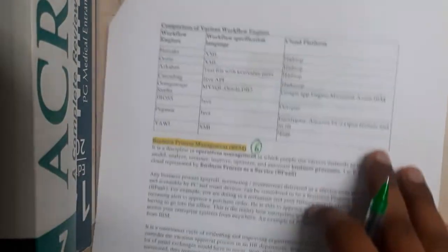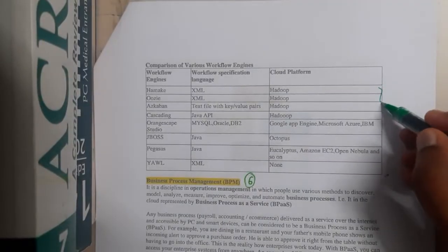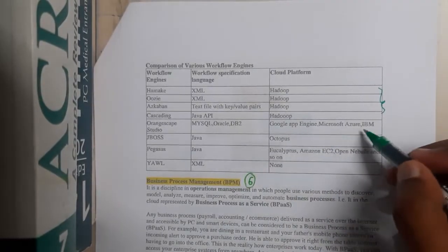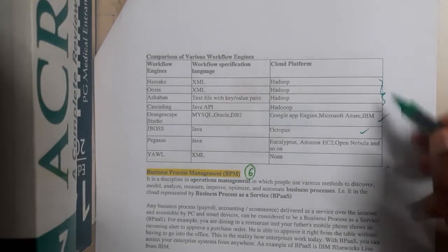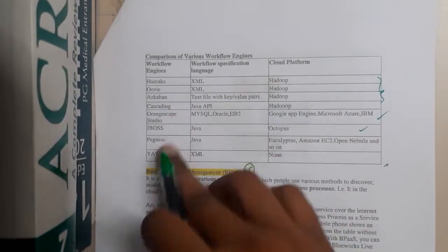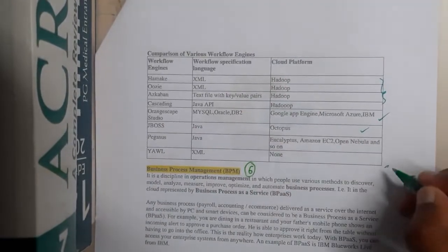This is the various languages. You know about Hadoop and all those engines, right? Google App Engine, Microsoft Azure, IBM's Cloud Octopus – these are some cloud platforms which help you based on your workflow engines. They are using some languages, and these are the platforms. You can just go through the tables.